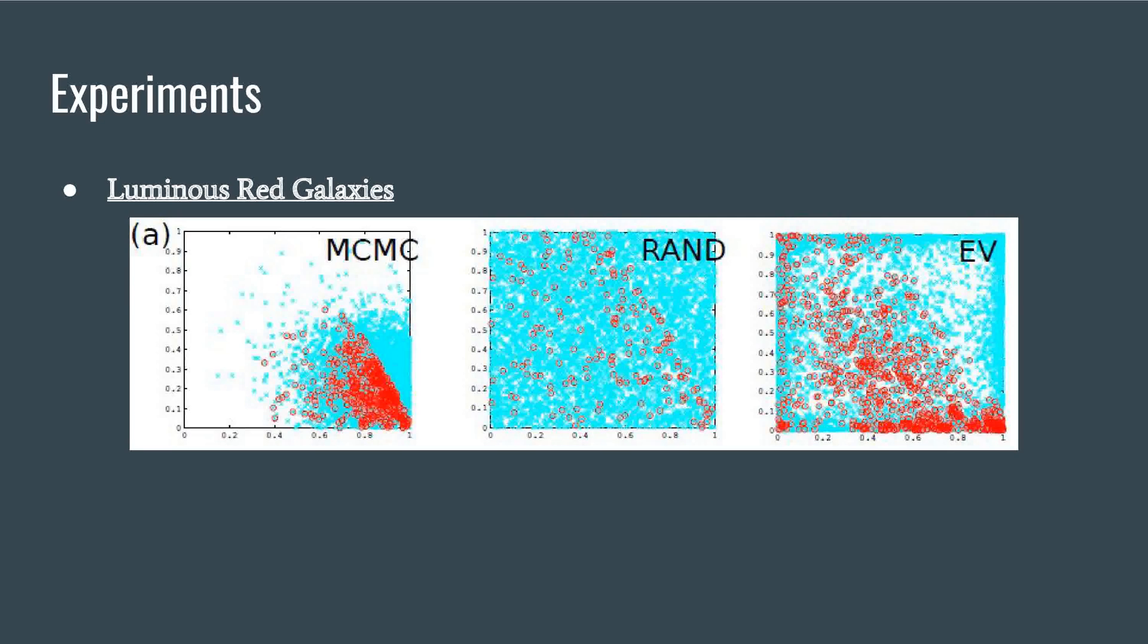MCMC has several high likelihood points, but its queries are focused on a small region of the space. RAND does not have many points at high likelihood regions. EV has explored the space fairly well and at the same time has several queries at high likelihood regions.